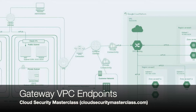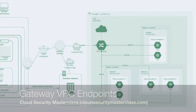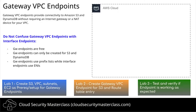You're watching the lab demos at cloudsecuritymasterclass.com. Gateway VPC endpoints enable workloads in the VPC to connect to Amazon S3 and DynamoDB without making your connection go through the public internet.